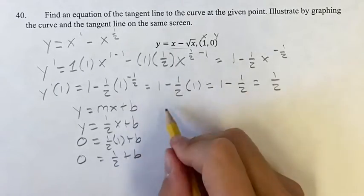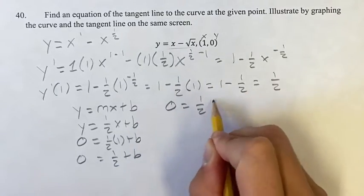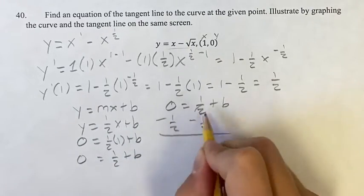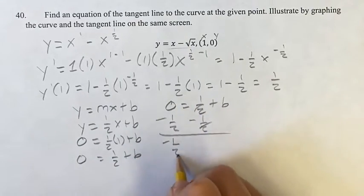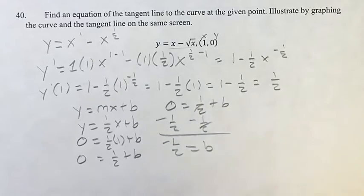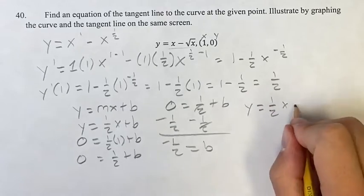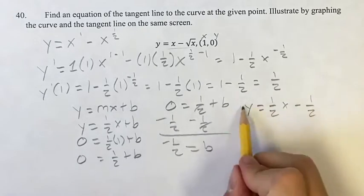Subtracting 1 half from both, I'll actually just write it up here so we don't run out of space. Subtracting 1 half from both sides, 0 minus 1 half is negative 1 half, is equal to b. So our equation is y is equal to 1 half x, that slope, minus 1 half is your y-intercept. That's going to be your final form.